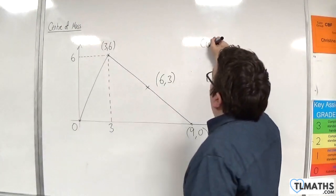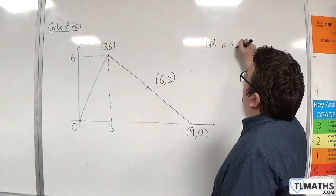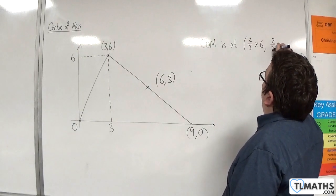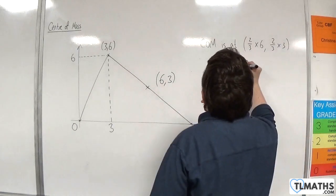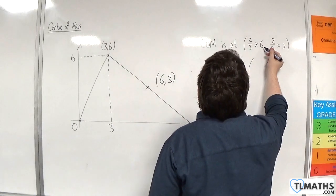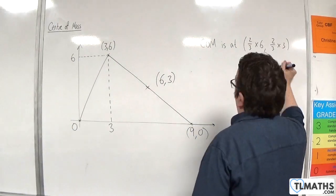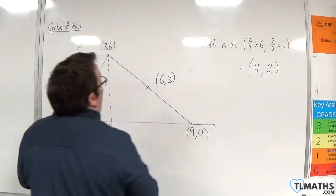So the center of mass is at two-thirds times 6, two-thirds times 3. And so two-thirds times 6 is twelve-thirds, so 4. Two-thirds times 3 is 2. So the center of mass must be at 4, 2.